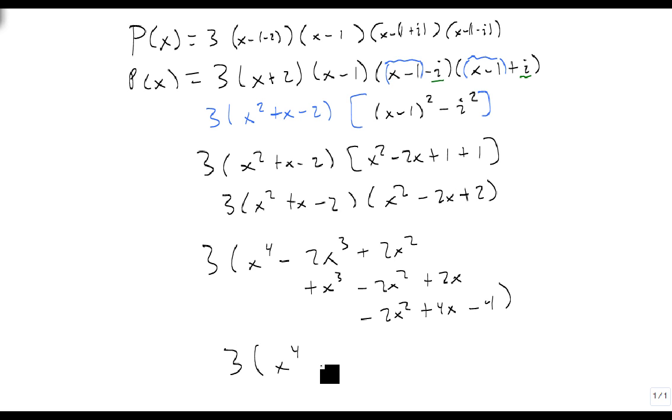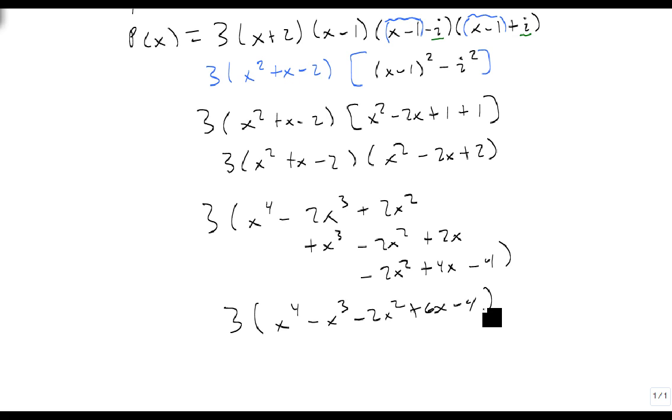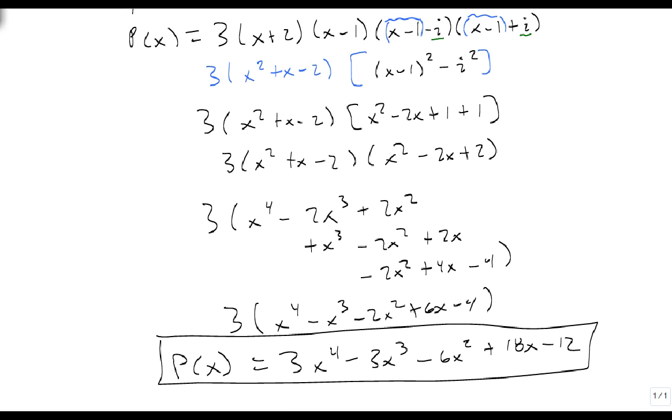So 3 times x to the 4th minus x cubed minus 2x squared plus 6x minus 4. Moving the 3 through, our final polynomial is 3x to the 4th minus 3x cubed minus 6x squared plus 18x minus 12. And here's our final answer.